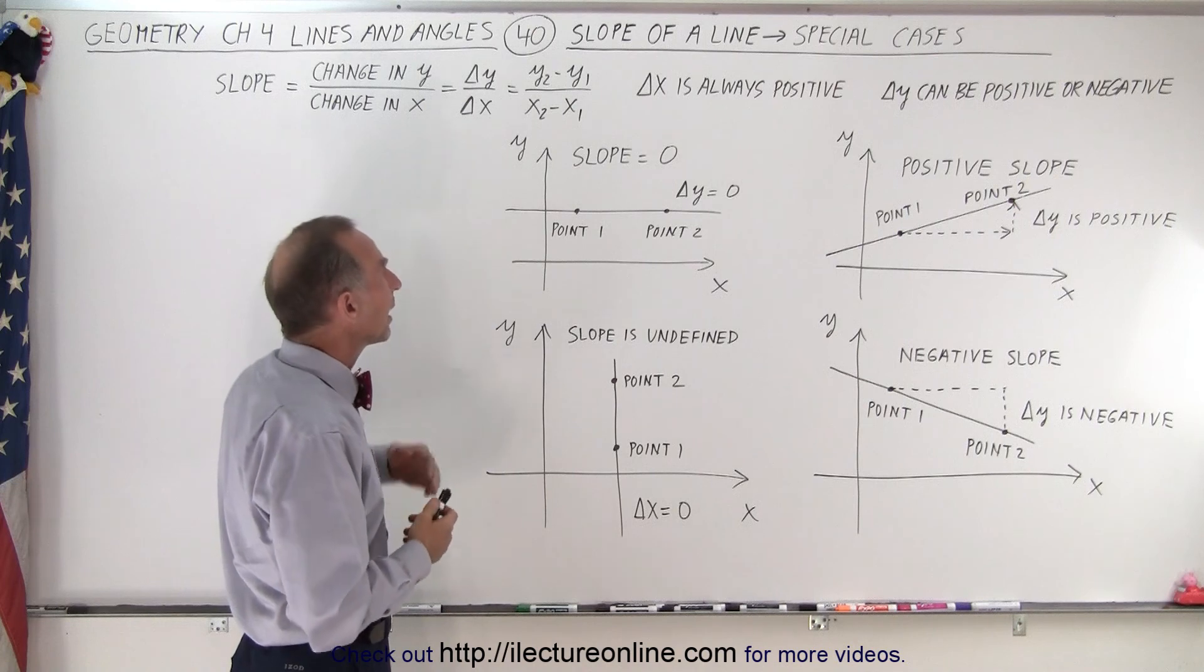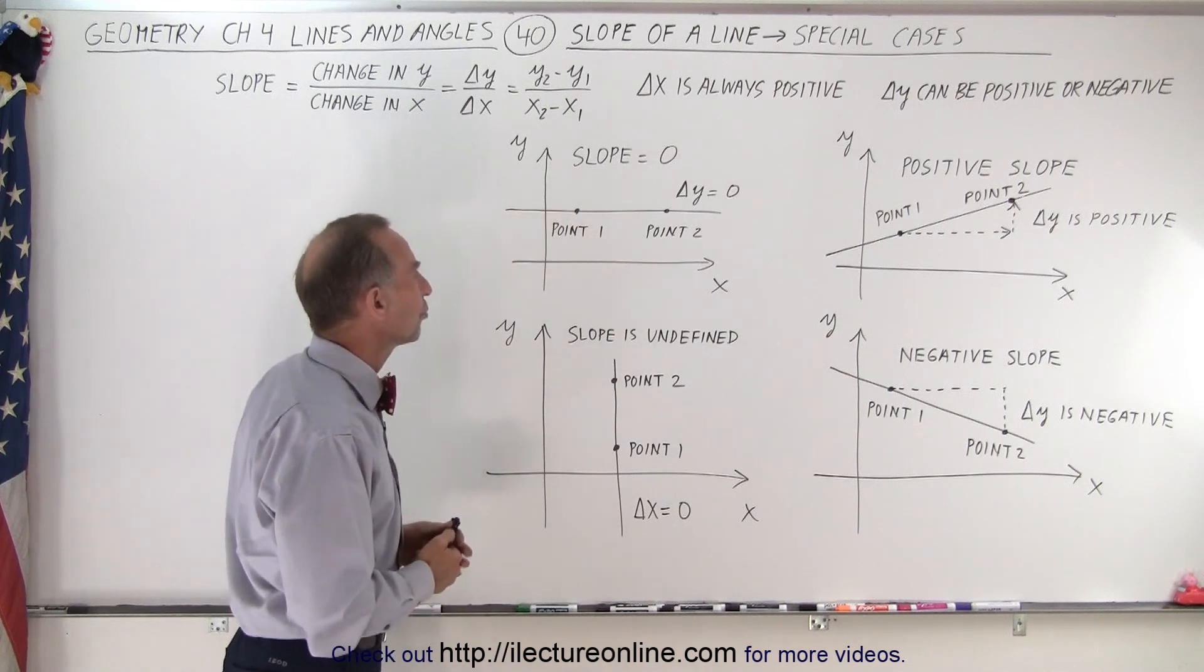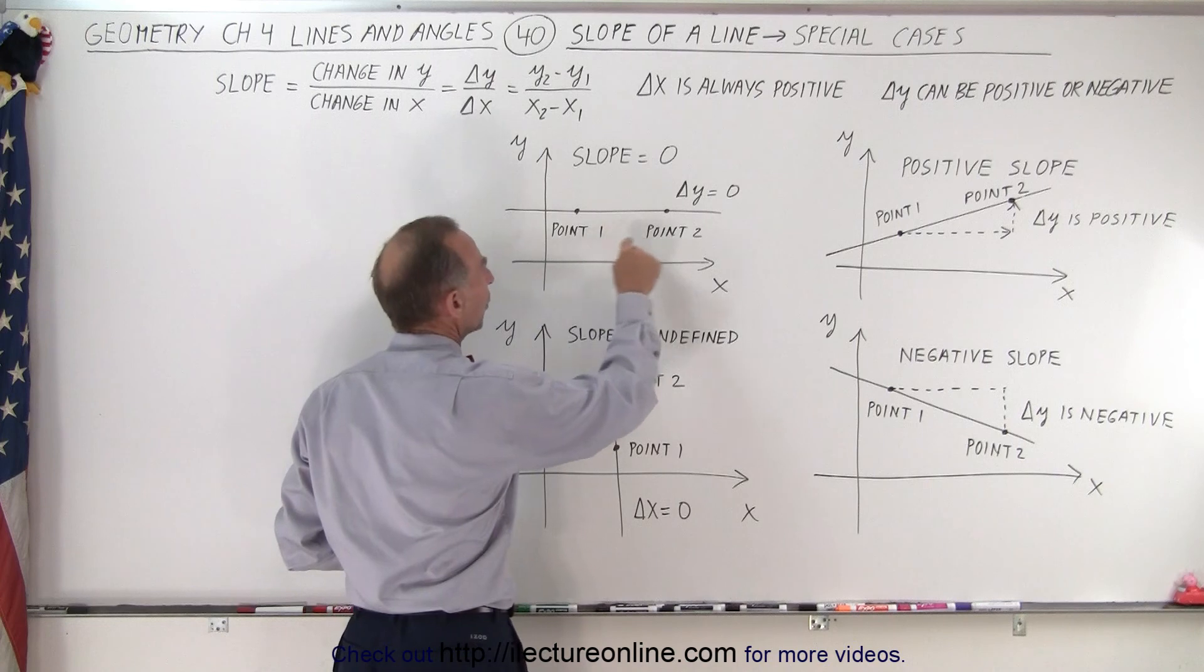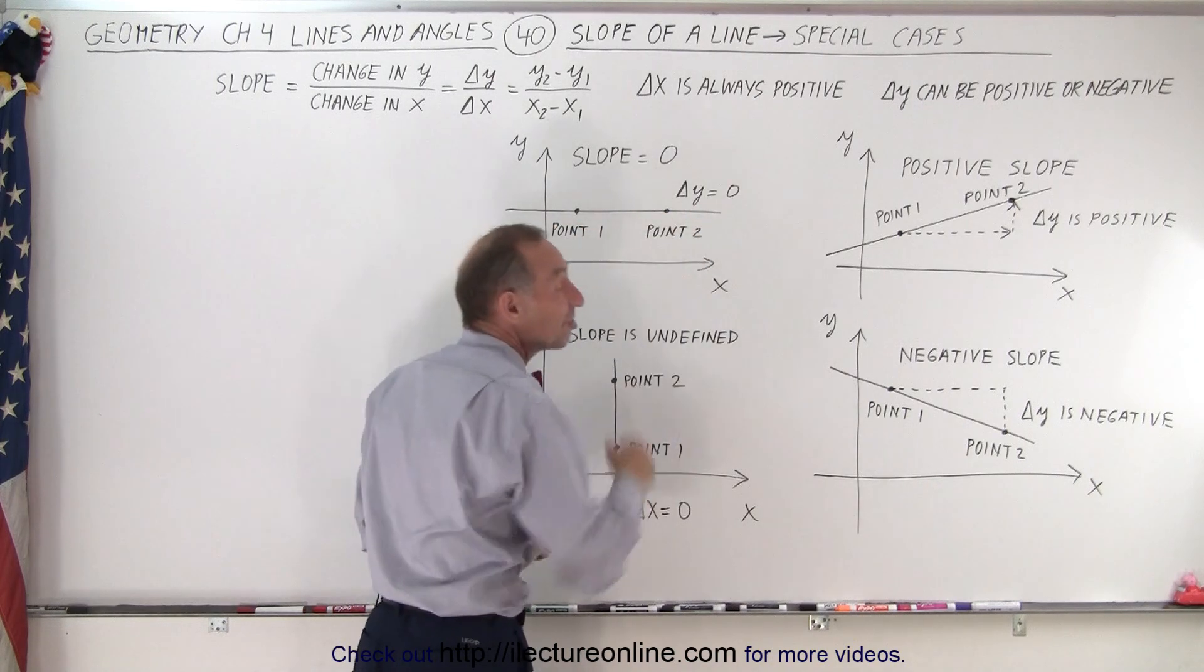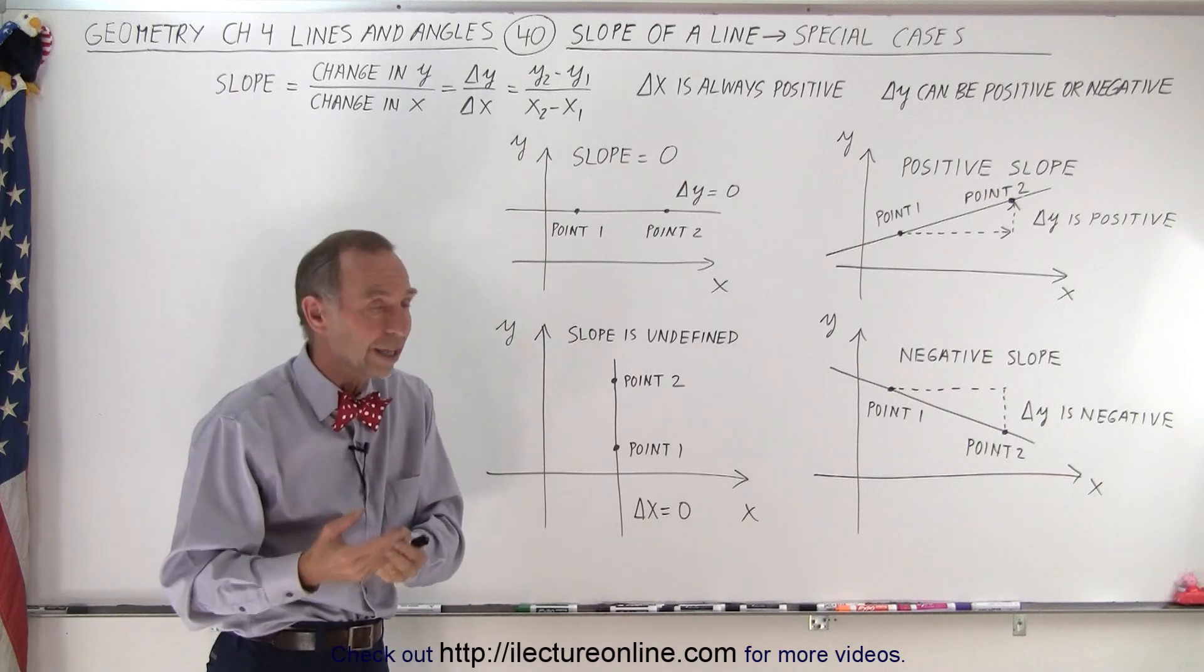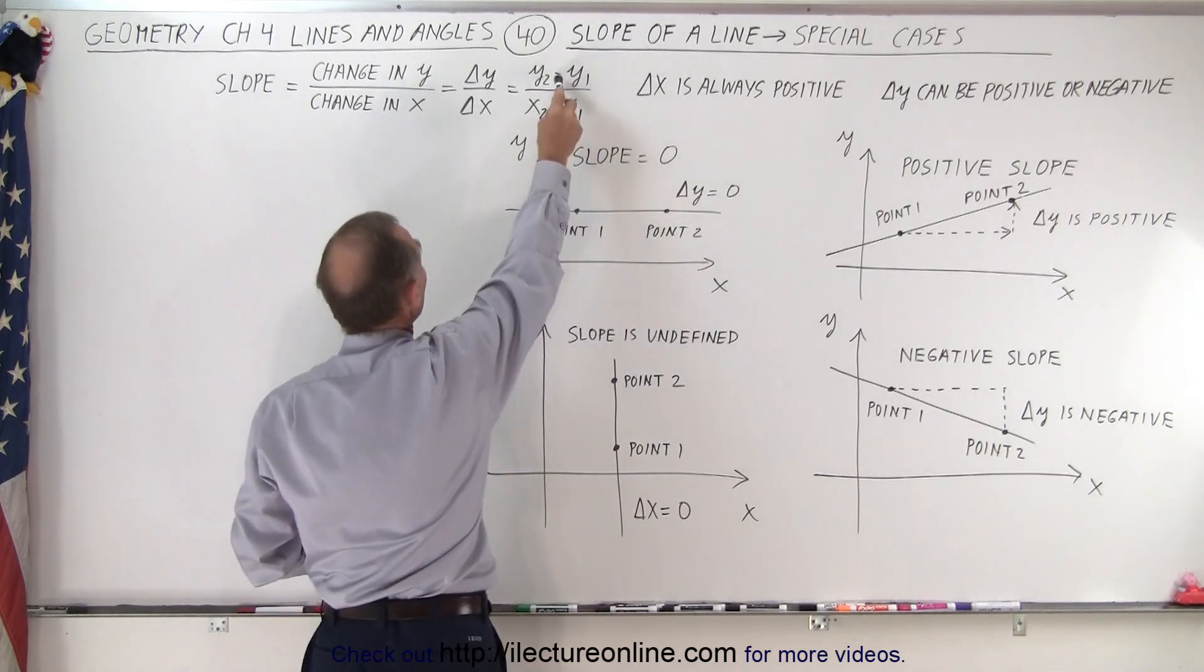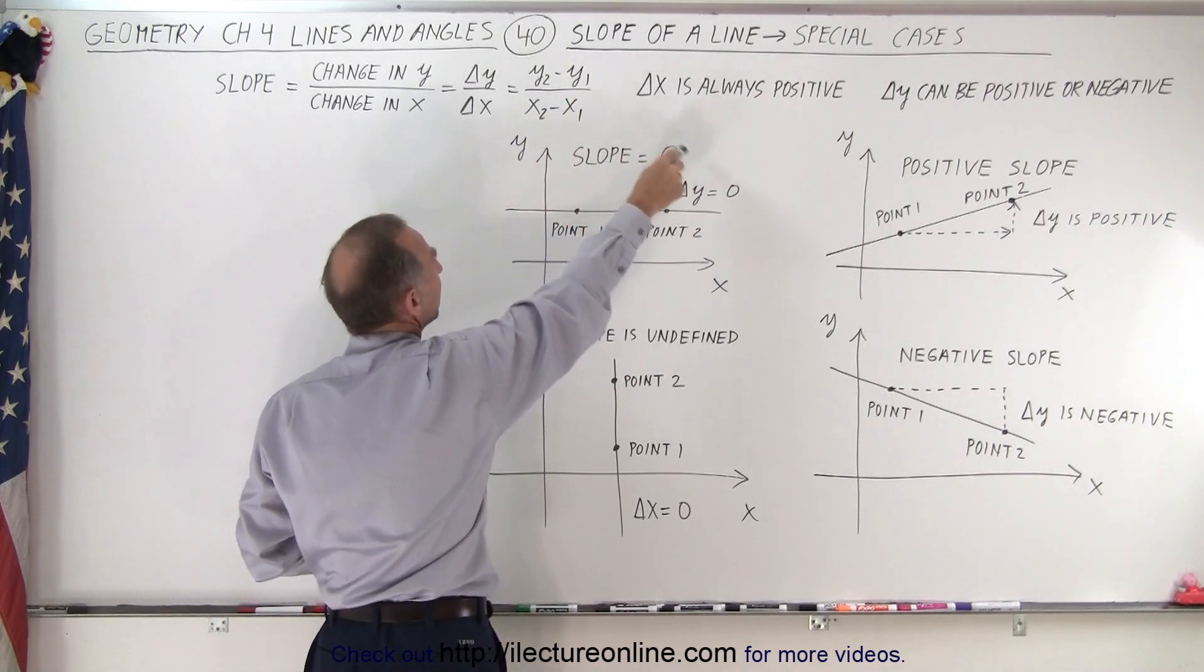But then we have the case where the line is horizontal, which means as we travel from point 1 to point 2, from left to right in the horizontal direction, there's no change in the Y direction, the change in Y is 0. And since that is the numerator, that means the slope then becomes 0.